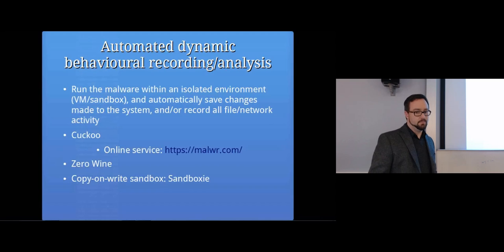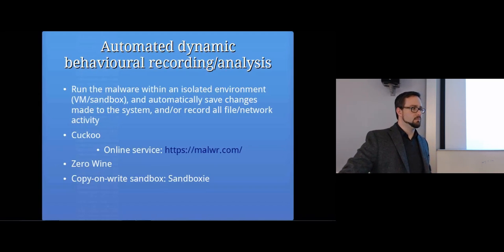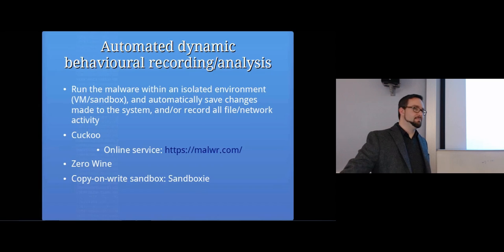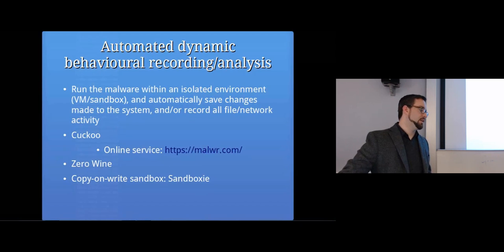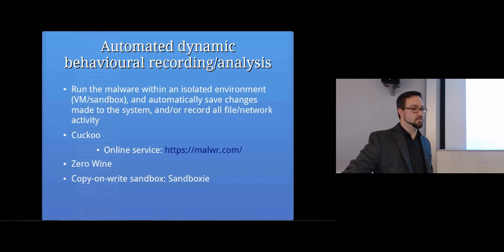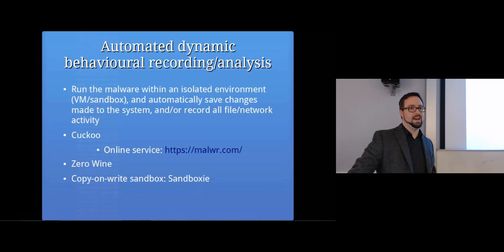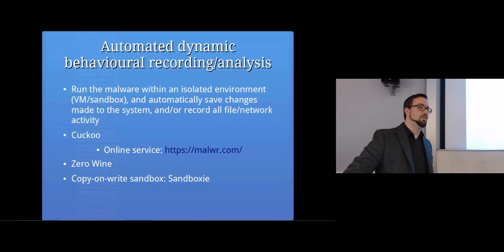Zero Wine is basically a virtual machine running Wine - the Windows compatibility layer - so that you can run a Windows program on a Linux system. You upload the malware sample to it, and it runs the sample in Wine and records what it's doing on the system. That's another way of generating reports and doing analysis on what a program is doing. The main disadvantage is that Wine isn't always perfect at being a Windows system, so it might not run properly or might give slightly different results than on an actual Windows system.